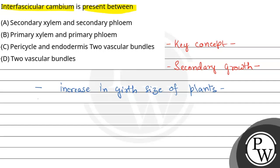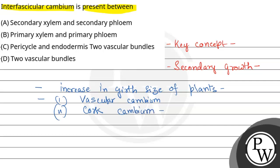During secondary growth, two main tissue layers are formed. The first is vascular cambium, and the second is cork cambium. Now, if we take the example of a dicot stem, we can see the formation of secondary growth.